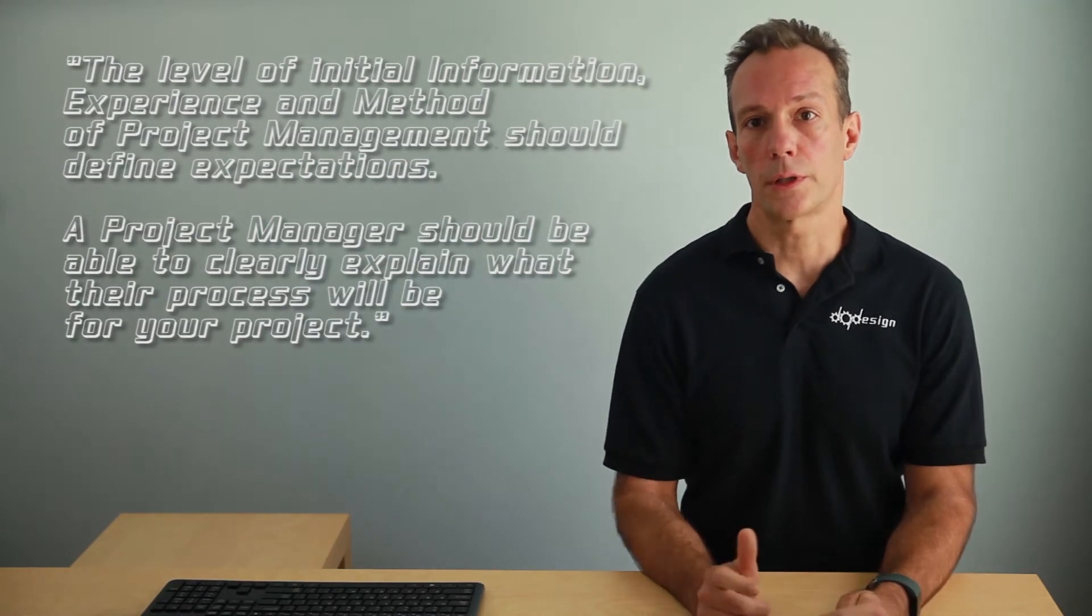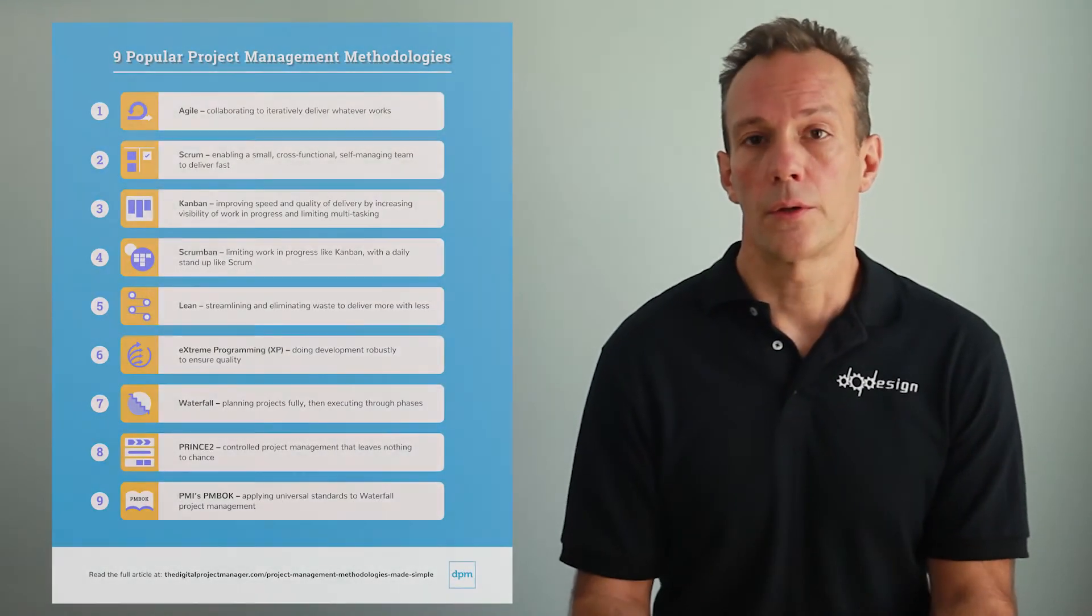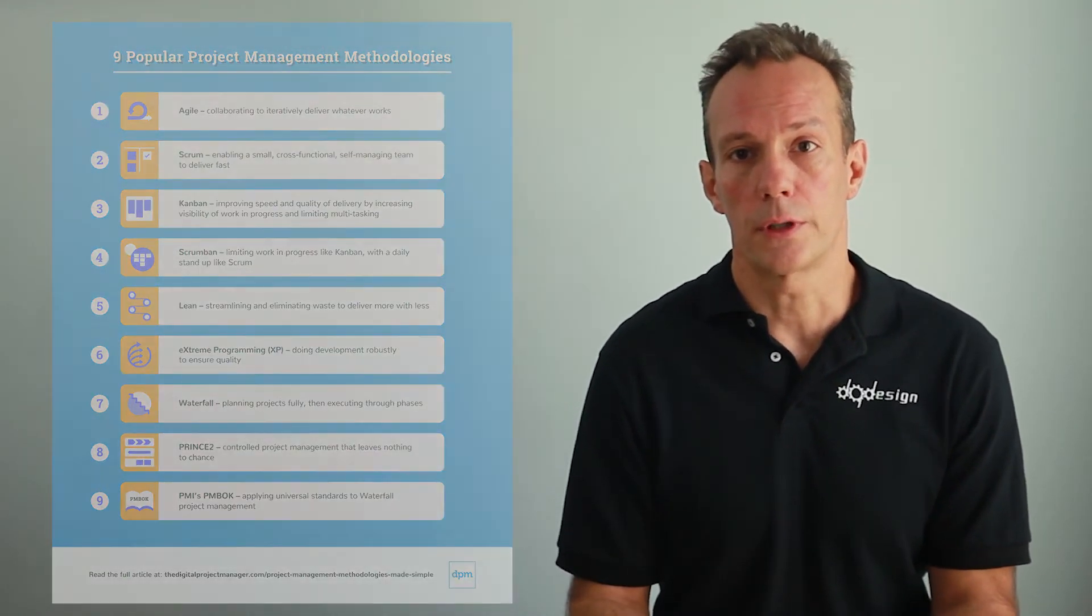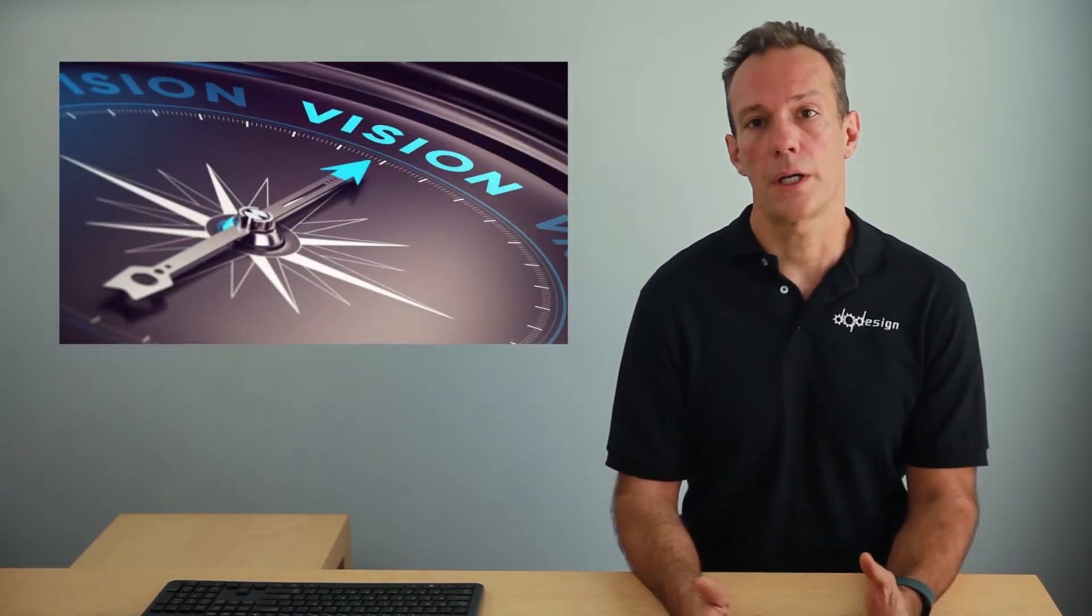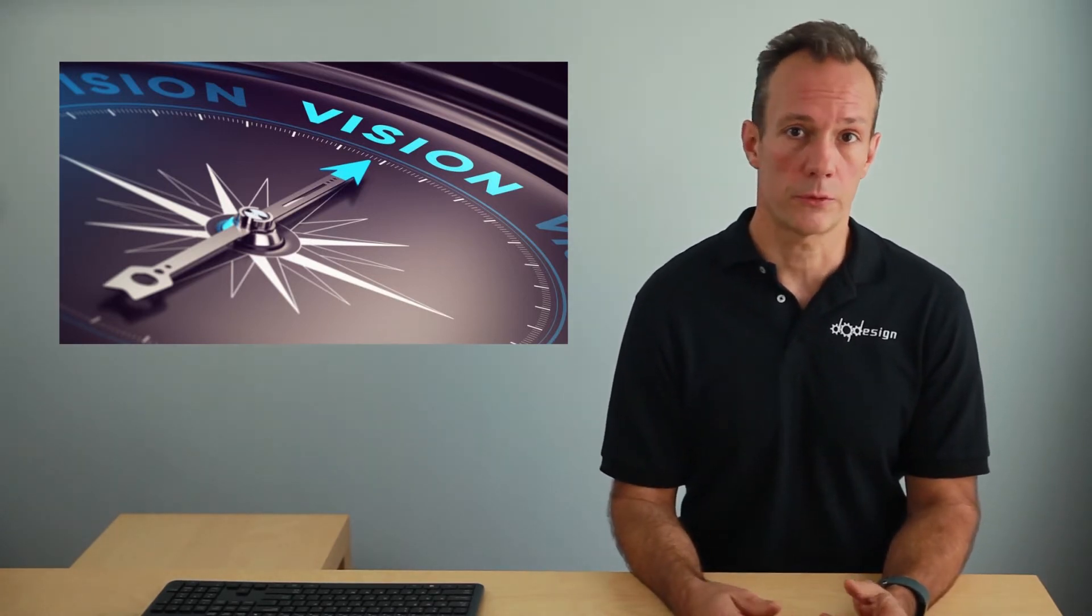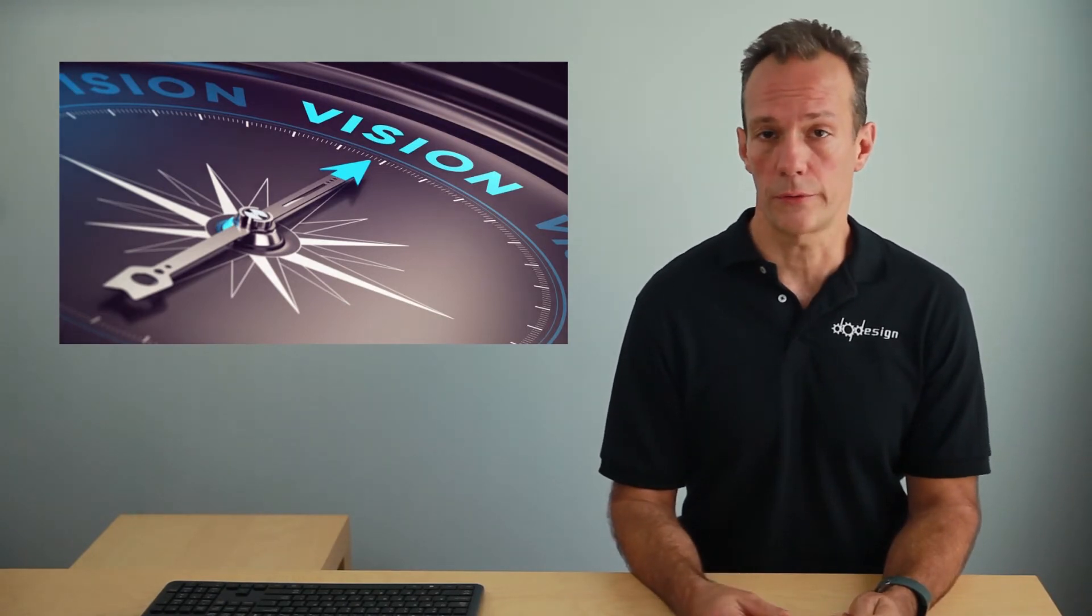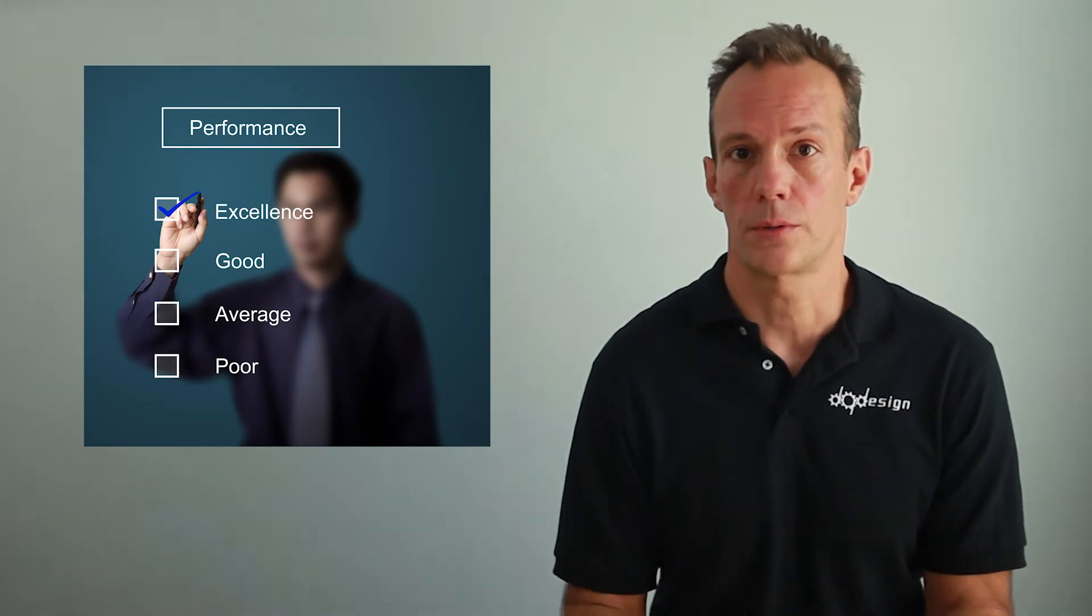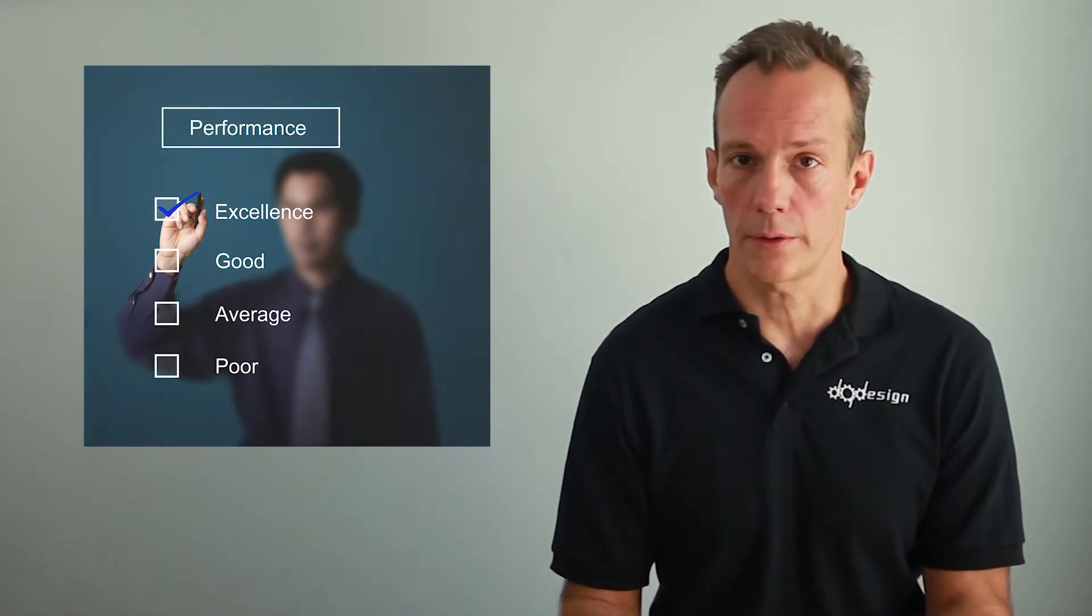A project manager should be able to clearly explain what their process will be for your project. There are a number of methods for project management, and almost every firm and project manager handle things differently. Because it is the client's project, they have the original vision for the result. The client should remain involved as much as possible in the process from start to finish. I've found their knowledge to always play a critical role in success. The firm's job is to bring the client's vision through efficient execution. The outcomes will vary, but the expectations should be measurable and tracked consistently.